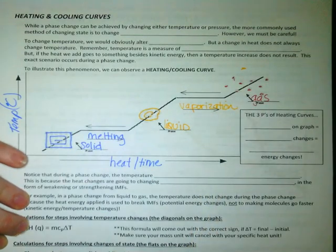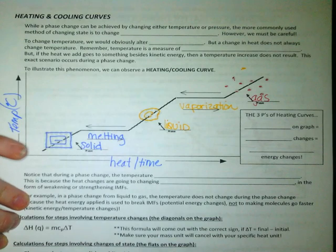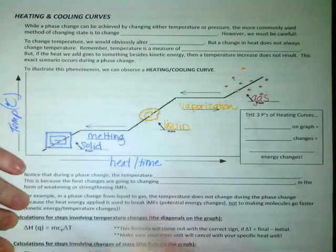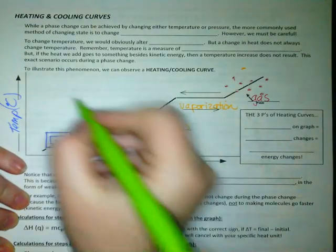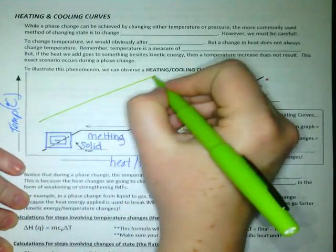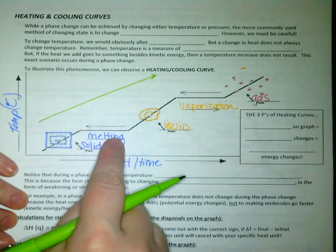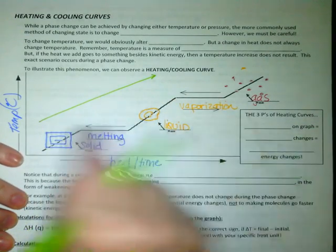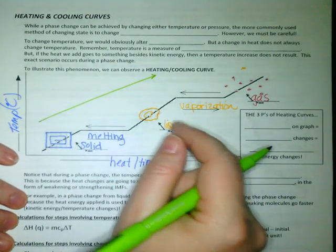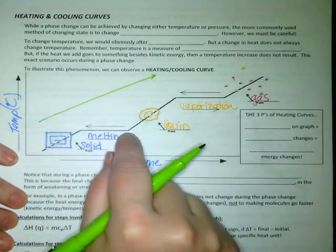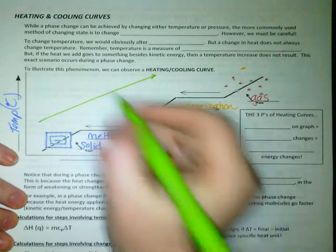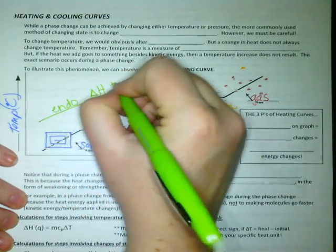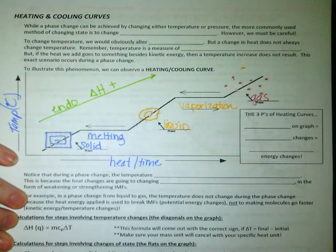In this phase, I don't really have particles connected together so much as all of these particles floating around doing their own thing. So when I'm going up the curve, I'm adding energy. Even during these plateaus, I'm still adding energy, even though my temperature isn't changing. I'm just using that energy to go through a phase change. So this is endo, and my delta H should be positive.